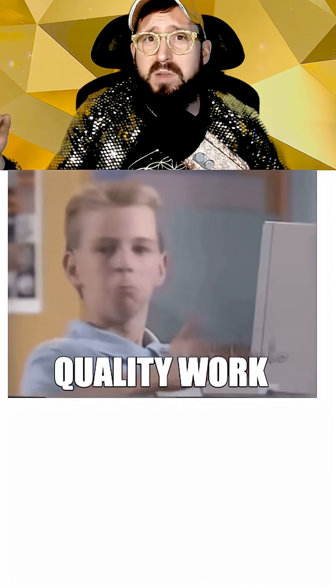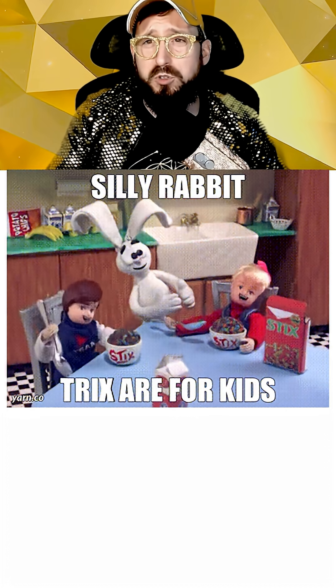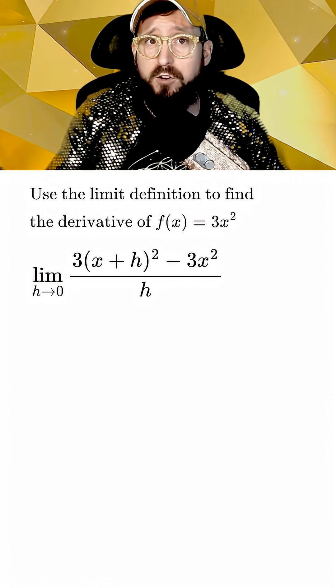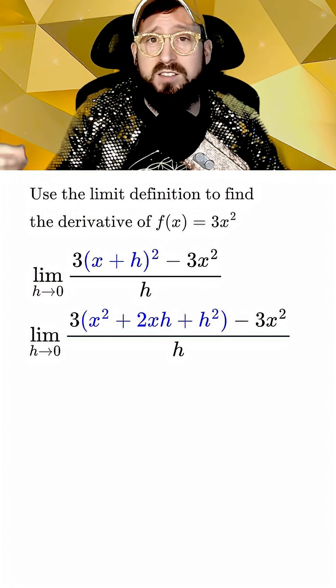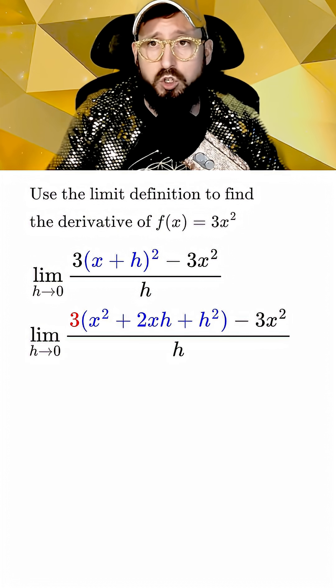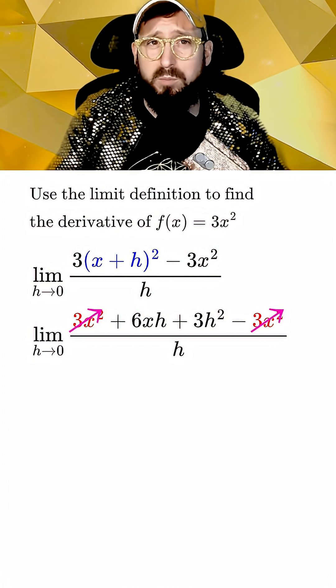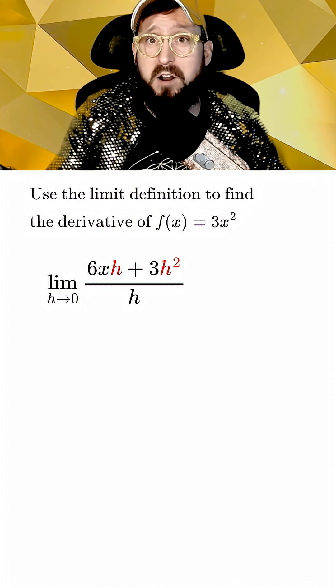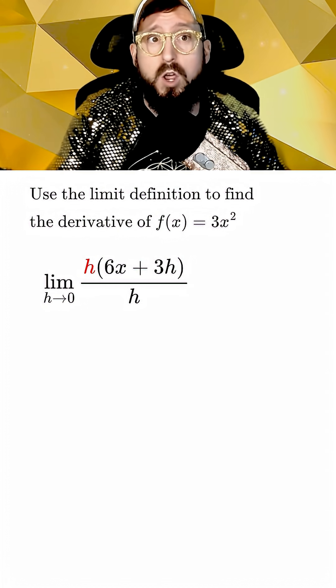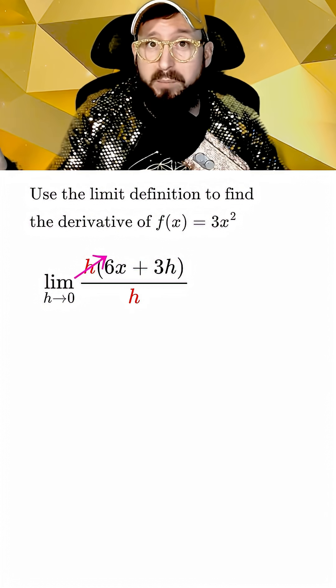When this happens, it means we need to do more work and try some algebra tricks first. We can kick things off by first expanding the (x+h) squared to x squared plus 2xh plus h squared. Now we distribute the 3 and then cancel out like terms. At this point, we can also factor out an h from every term on the top, which will end up cancelling with the h in the denominator.